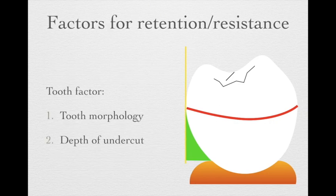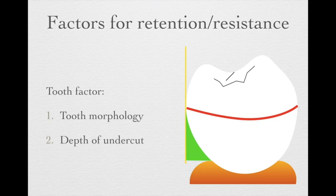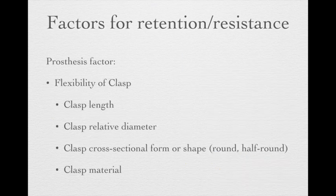Several factors affect the amount of retention or resistance. The first is tooth morphology — different tooth morphology creates different heights of contour, which create different depths of undercut. More depth of undercut means more retention. We also have prosthesis factors, basically depending on clasp flexibility. When the clasp is more flexible, the retention is less.